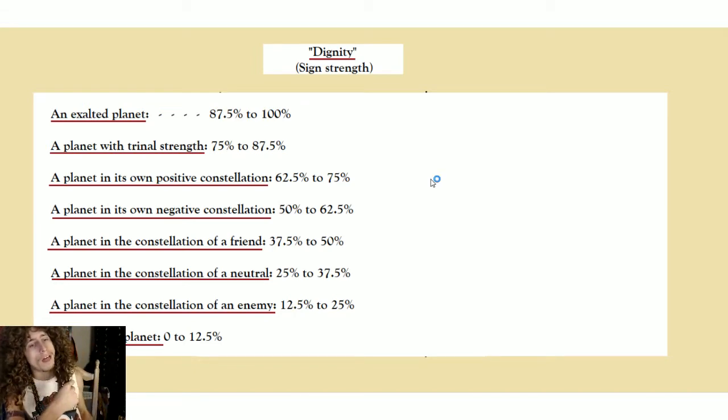A planet in its own negative constellation is just one step down. So this would be like Mars in Scorpio, Saturn in Capricorn, Venus in Taurus, Mercury in Virgo in the latter parts of Virgo, etc.